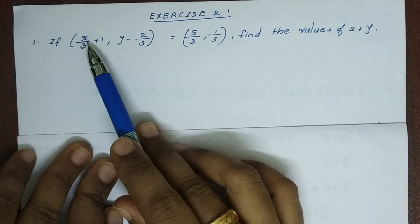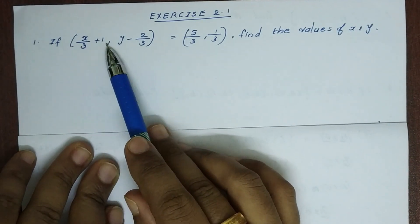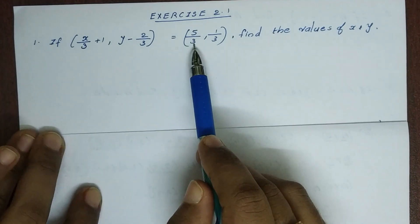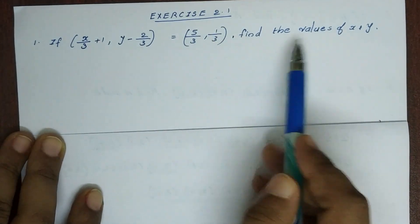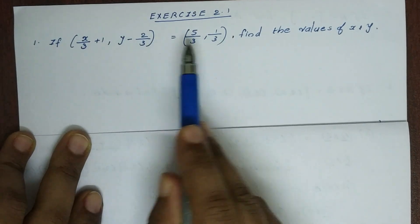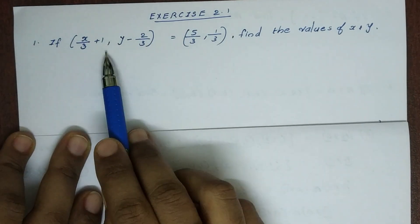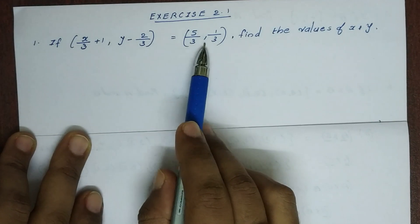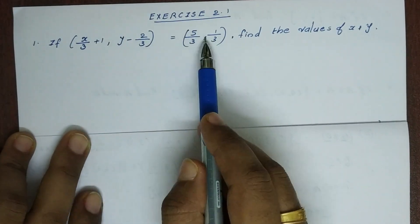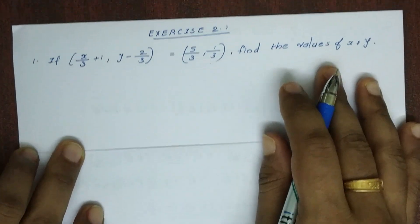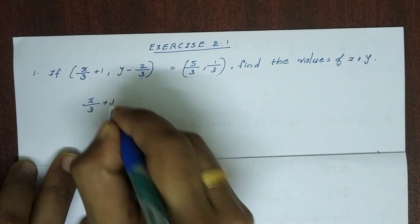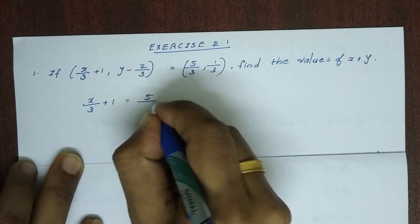First question: if the ordered pair (x/3 + 1, y − 2/3) is equal to (5/3, 1/3), find the value of x and y. We have two ordered pairs equal to each other, so x/3 + 1 = 5/3.